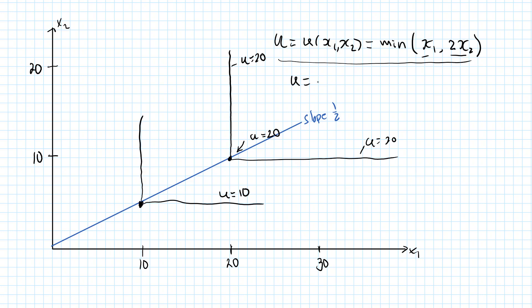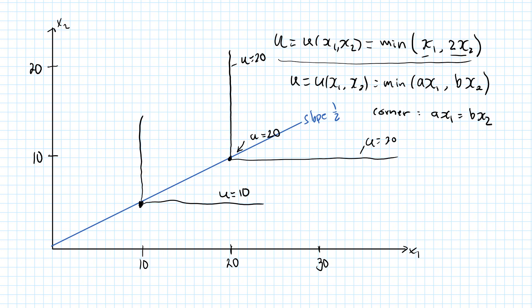From the same kind of argument, we can generalize this. If I have a utility function which is the min of some constant a times x1 and another constant b times x2, then this will represent perfect complements. I will be at a corner precisely when ax1 is equal to bx2, or equivalently when x2 is equal to (a/b)x1, which means that the slope of this blue line is a/b in this general case.